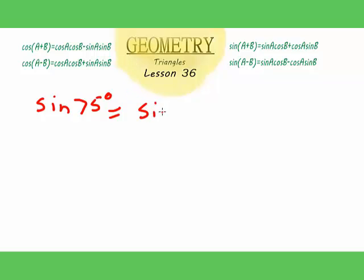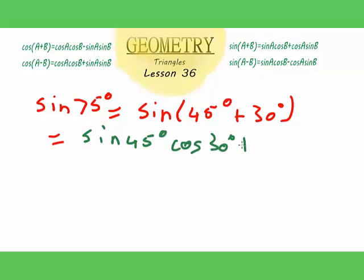Splitting it up into sine 45 degrees plus 30 degrees, and simplifying this using sine A plus B equals sine A cos B plus cos A sine B, we get sine 45 degrees cos 30 degrees plus cos 45 degrees sine 30 degrees.